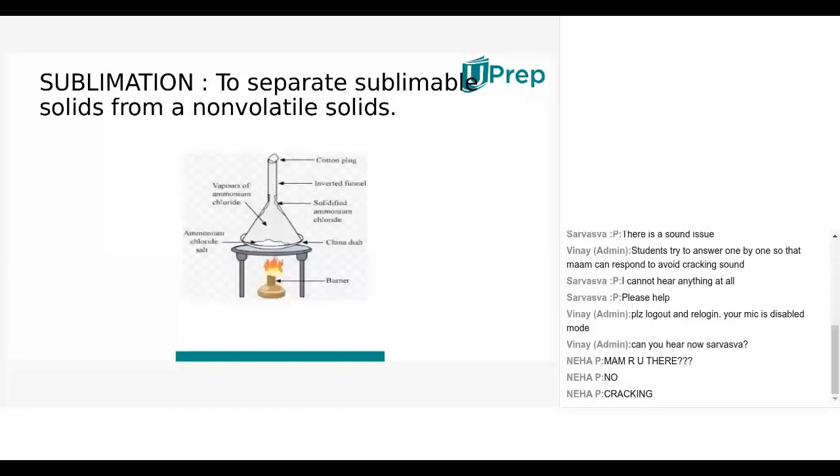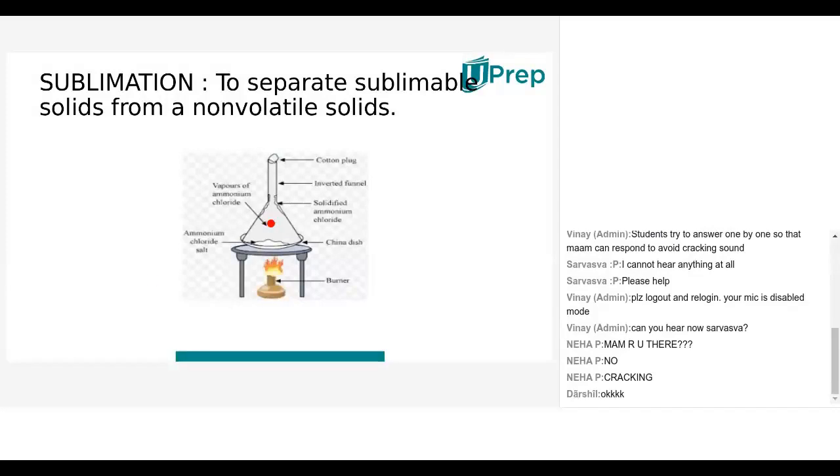Here in sublimation, you take the solid and give heat energy. When you give heat energy, it converts into gaseous state and adheres to the walls of the funnel. This funnel is used for the filtration process. We take the inverted funnel and place it on top of the china dish.